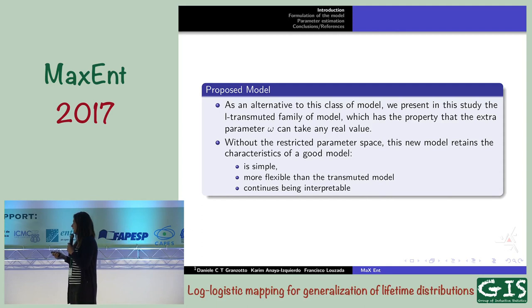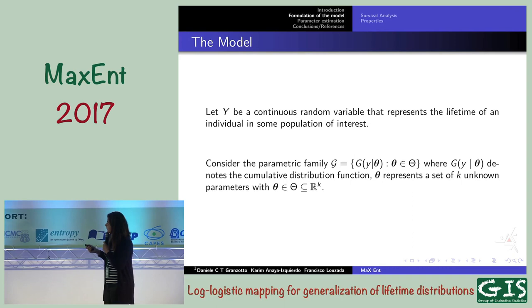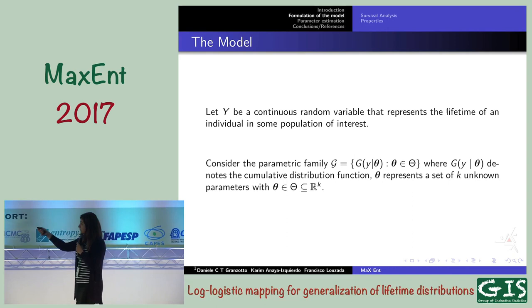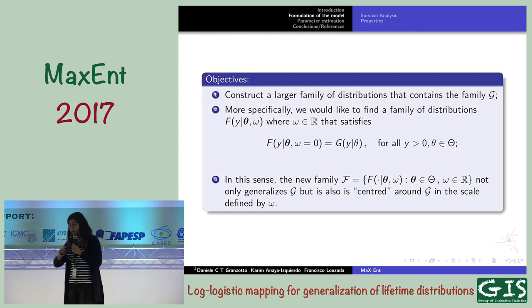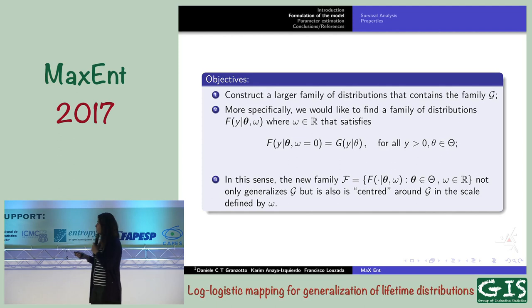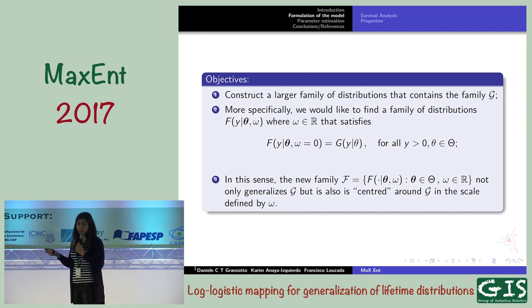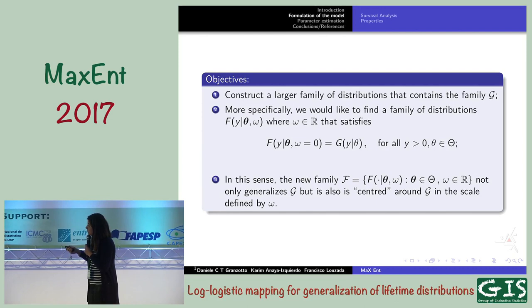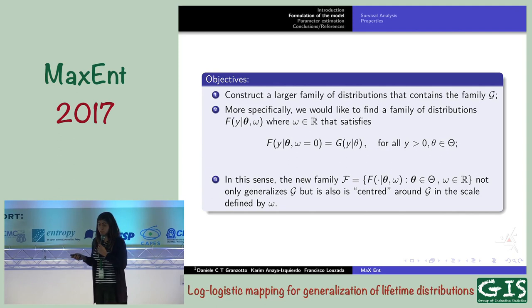Let Y be a continuous positive random variable representing the lifetime of some individual. Let's consider the family G as G(Y|theta), the cumulative distribution function. Our objective is not only to extend a model — we would like to extend this model by constructing a large family of distributions that contains the family G. More specifically, we would like to find a family of distributions F — the L-transmuted family — such that at the point when omega equals zero, we recover the baseline distribution G. So when omega equals zero, we recover the cumulative distribution of the baseline family.